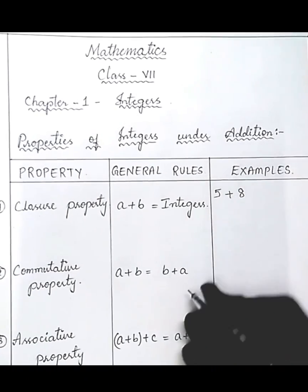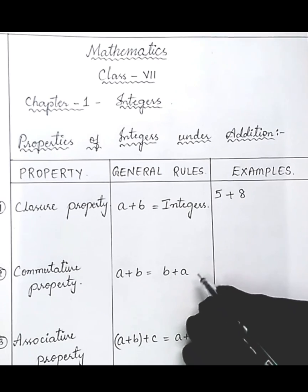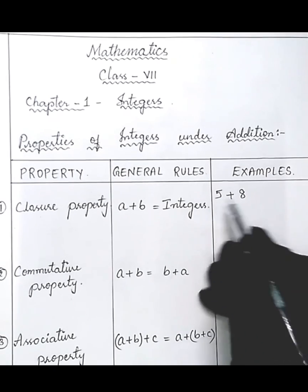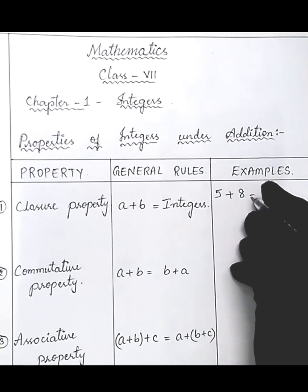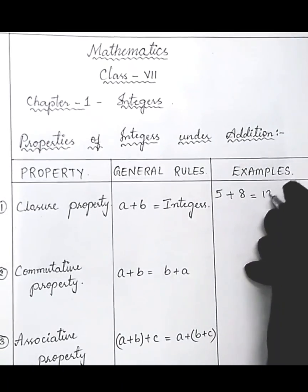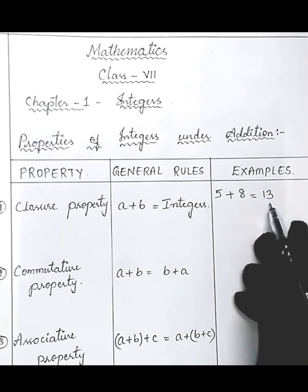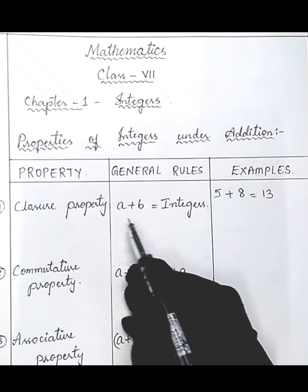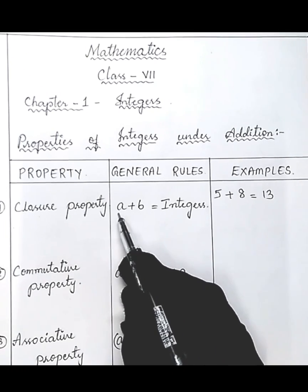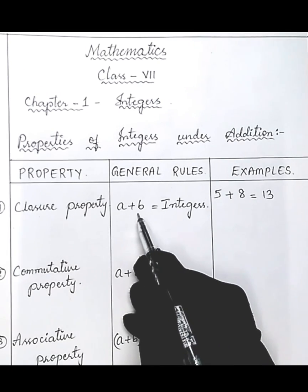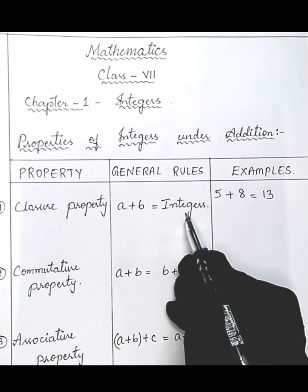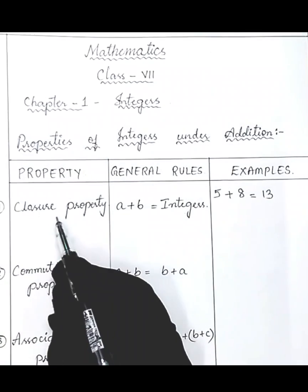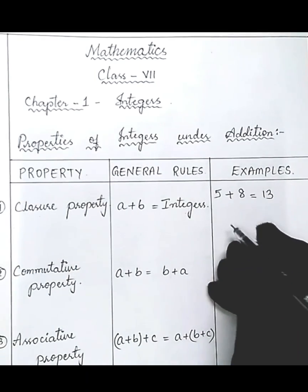Eight is also an integer. Suppose five is one integer and eight is another integer. When you add them, we get 13. 13 is also an integer. So we can see that if a is an integer and b is an integer, the sum of a and b is also an integer. This is called the closure property.